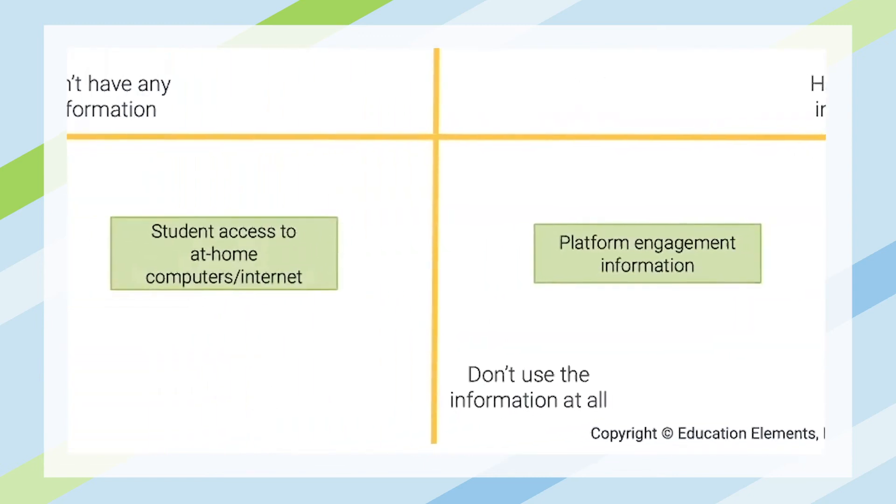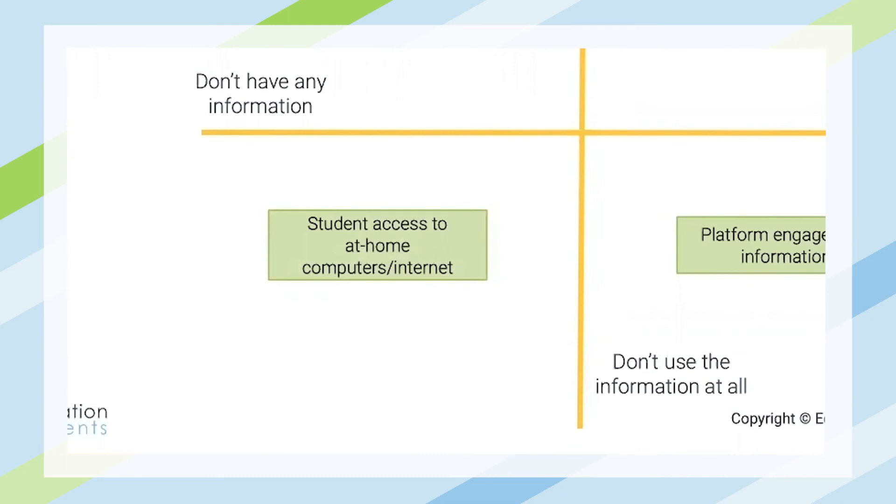A somewhat controversial example: prior to COVID, we did not have much information about students' access to at-home computers and internet, and didn't really use much of what we had. The best examples were student or parent questionnaires asking if they had a computer or internet at home, but response rates were pretty low. Come March and April of 2020, the very first thing most school districts had to do was figure this out — if kids were going to be at home and dependent on distance learning, we had to know who had access and who didn't.